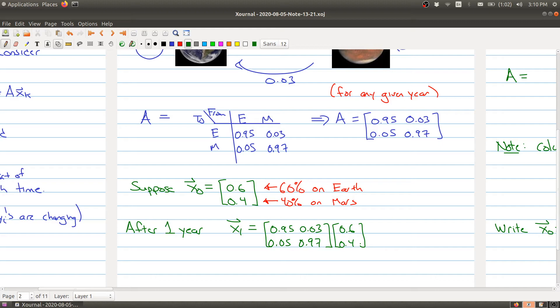Let's think about why this is true. For the first coordinate, if 60% of the population is on Earth, 95% of those people stay, and we get 3% of the 40% from Mars. After one year, 58.2% of the population is on Earth. For Mars, it gets 5% of the 60% from Earth and keeps 97% of the 40%, giving 0.418. So after one year, 58% is on Earth and 41% is on Mars.